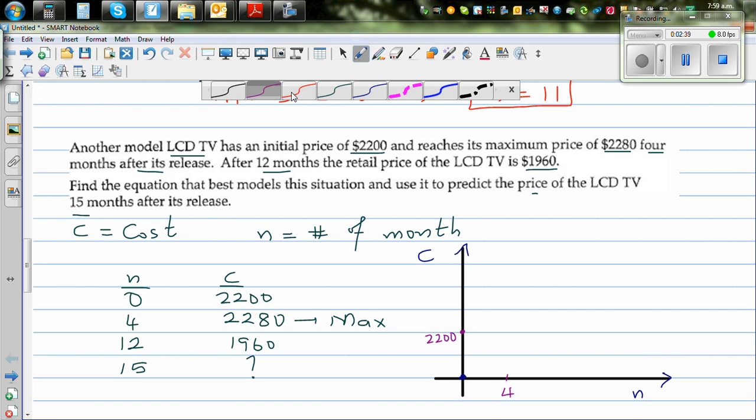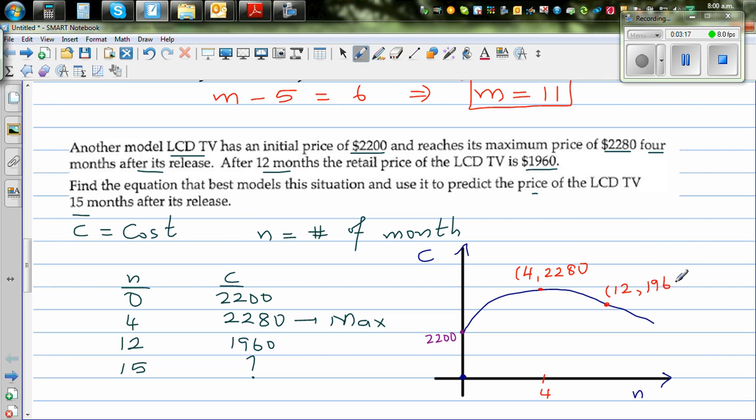Let me draw the graph. It is a parabolic graph. So it grows somewhat like this. The 4 months is in the middle. So this is the maximum. So at 4 months, the price is 2,280. And in the 12th month, the price is 1,960. And the question is, if in the 15th month, what is the price?